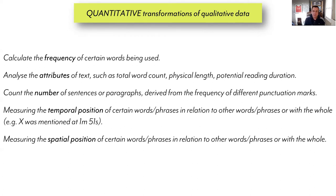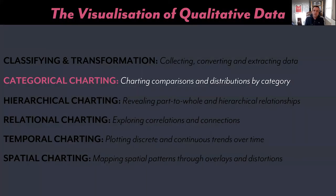So what I want to get across is that the secret to visualizing qualitative data isn't really about a unique branch of chart types that you can only use with qualitative data. It's more about this intervention, this transformation. Having established that, I want to switch to give you some examples of qualitative visualizations, using chart types that are common to many different types of data, many different types of analysis. I'm organizing these by five distinct families that spell out an acronym — C-H-R-T-S: categorical, hierarchical, relational, temporal, and spatial. These are different ways to organize chart types based primarily on what it is you are trying to show people.